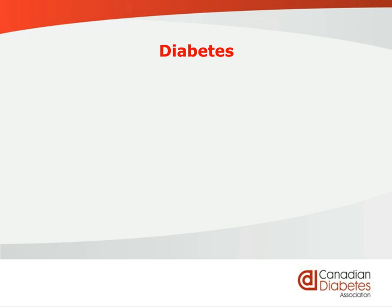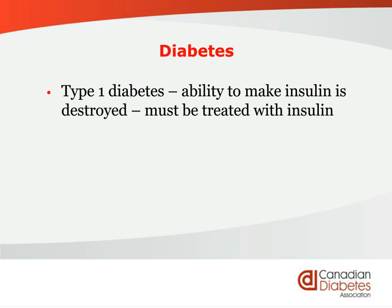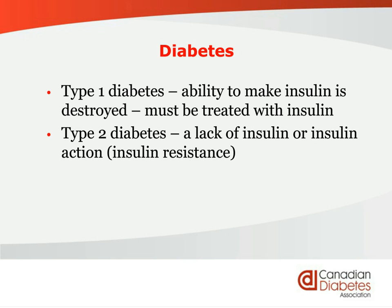In type 1 diabetes, the ability of the body to produce insulin is destroyed. It's an autoimmune disease and they need to start with insulin right away. In type 2 diabetes, there might be a lack of insulin or the inability of the insulin to actually work fully, called insulin resistance. If you have type 2 and go on insulin, you are not now type 1. If you start with pills or lifestyle, you always have type 2, even if you end up only on insulin.